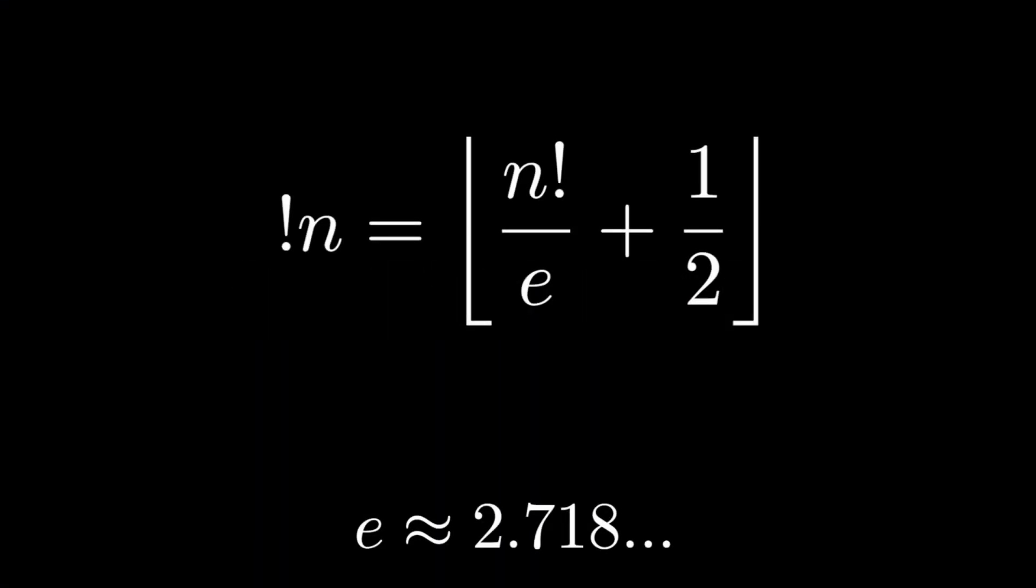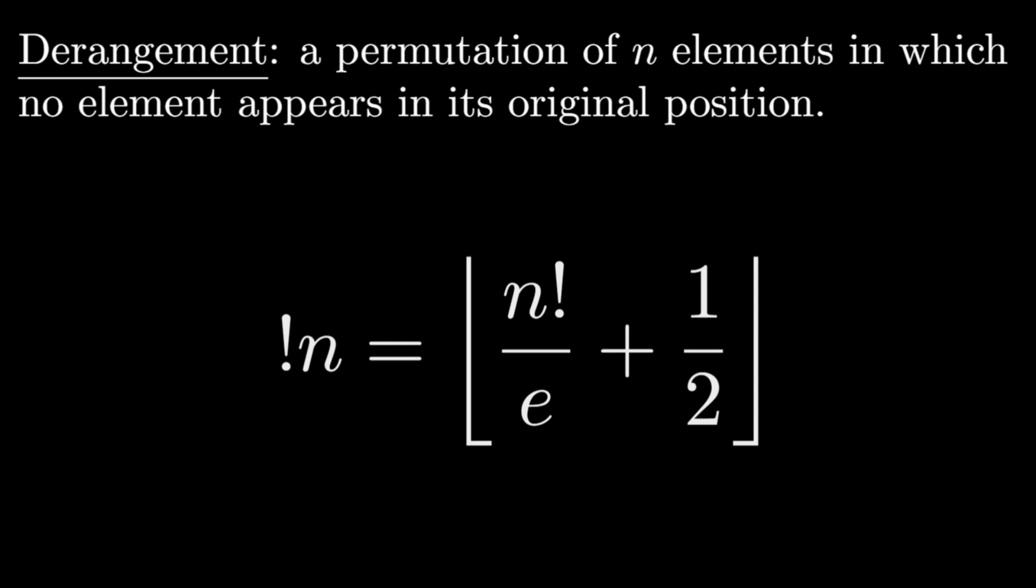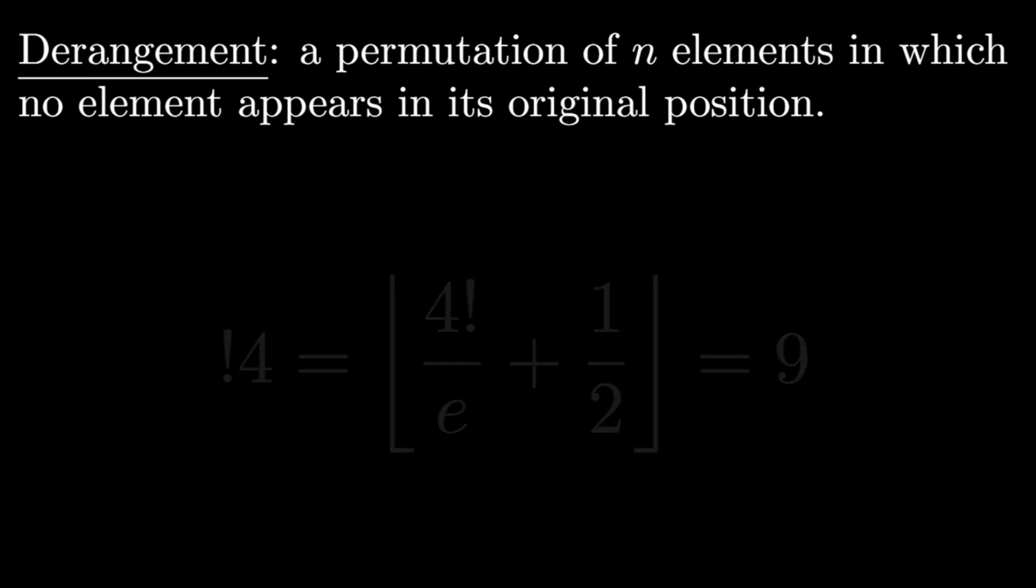The sub-factorial is the closest integer to n factorial over e, which we can denote by adding one half and taking the floor of this value. The most common use of the sub-factorial is calculating the number of derangements of a set of size n, where a derangement is a permutation of the elements of a set in which no element appears in its original position.